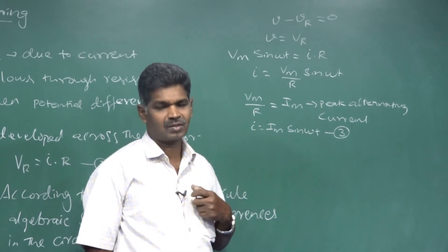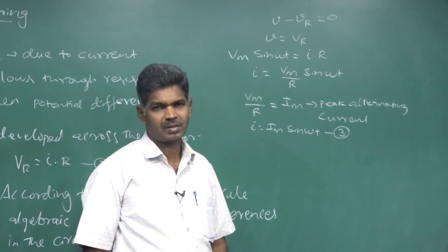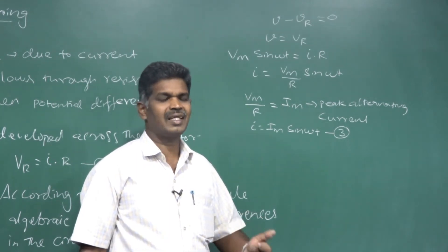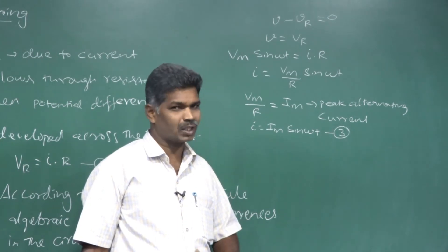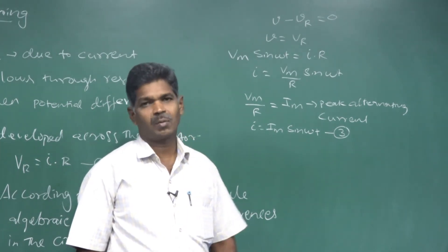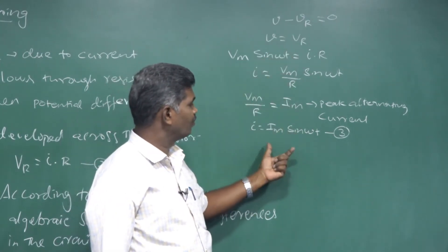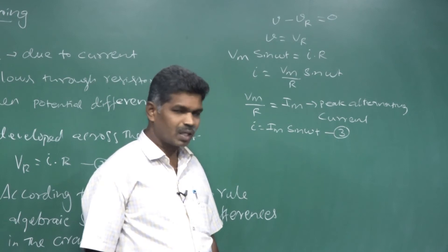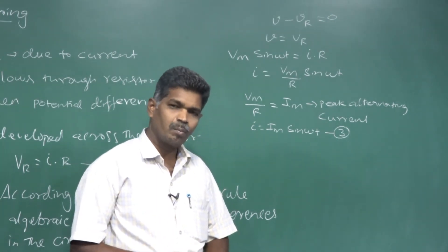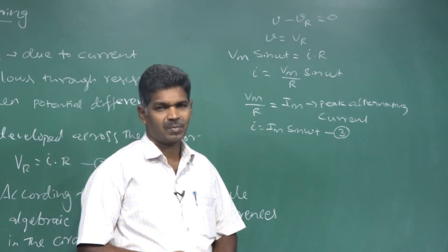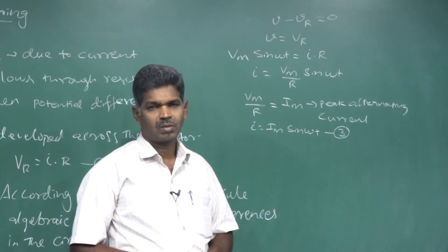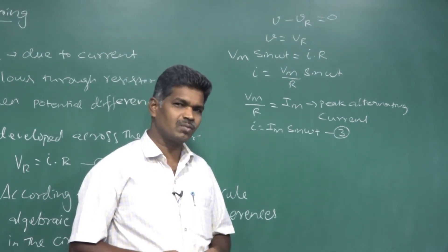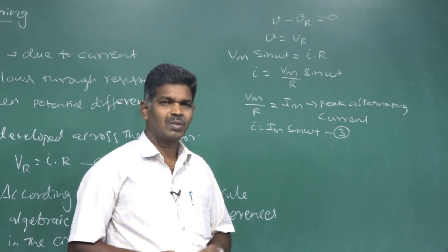According to Kirchhoff's law for a circuit containing a pure resistor, the algebraic sum of potential differences in the circuit is zero - that is, instantaneous EMF minus voltage developed across the resistor equals zero. From this condition we find: instantaneous current I = IM sin(ωt), where IM is the peak or maximum value.